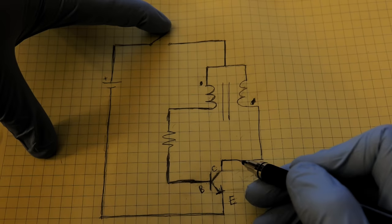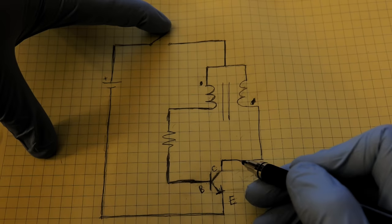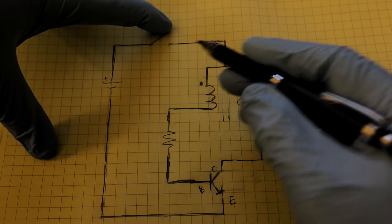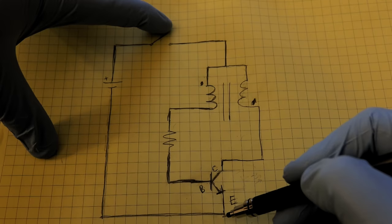And as it does this, the collector begins to open. Now the transistor isn't just only on or only off. It can be partially open, which is what's happening right here. The collector begins to slightly open. And as that happens, current flows through this coil, through the collector, out the emitter.